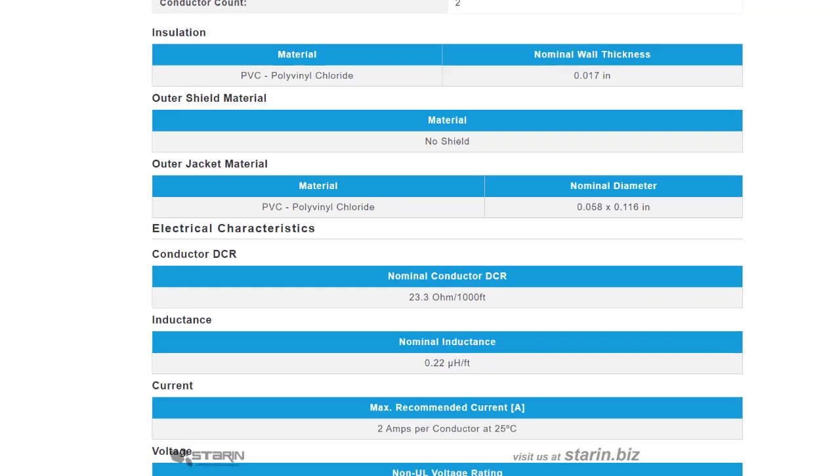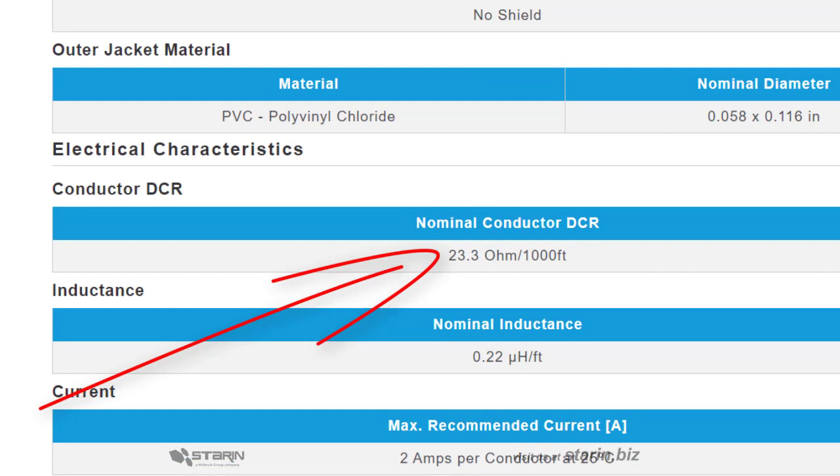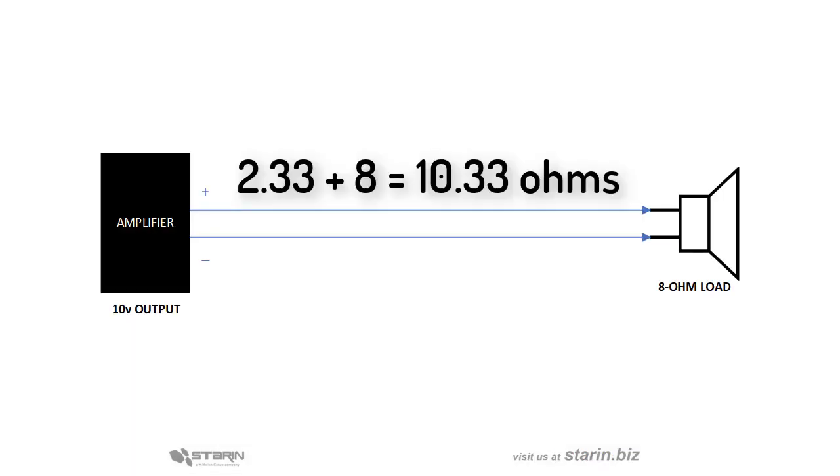Here's the data on the 24 gauge speaker cable. You see here that the resistance is 23.3 ohms per thousand feet—that's 2.33 ohms per hundred feet, which will add to the speaker load to get a total resistance of 10.33 ohms in the circuit.